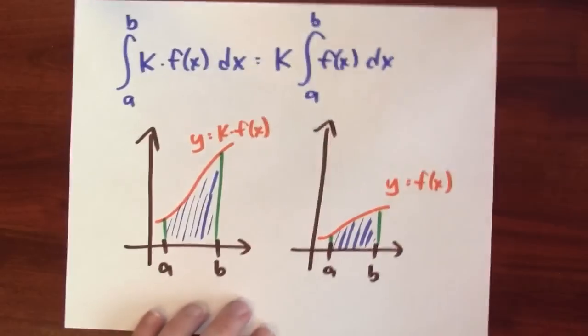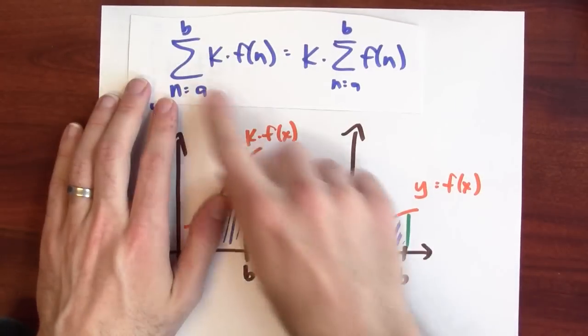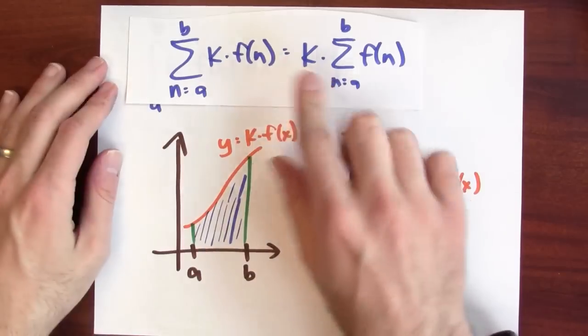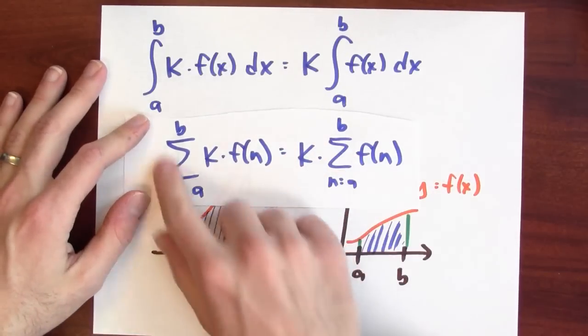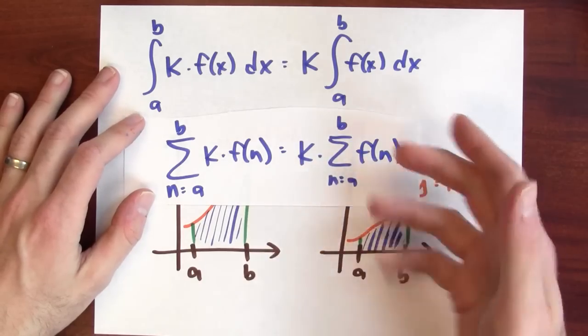Same kind of game here. I've got this constant multiple rule for integrals, and I've got a corresponding constant multiple rule for sums. Of course, this constant multiple rule is just called distributivity. If I add up k times something, that's k times the sum of these things. But it's the same kind of rule.